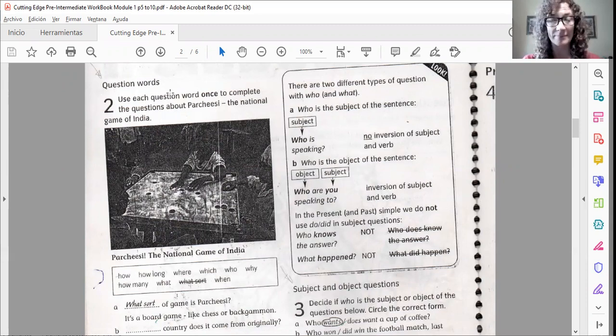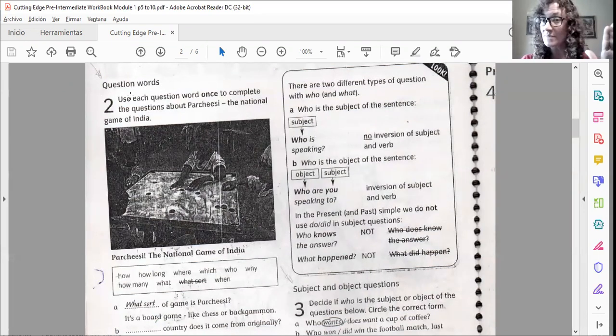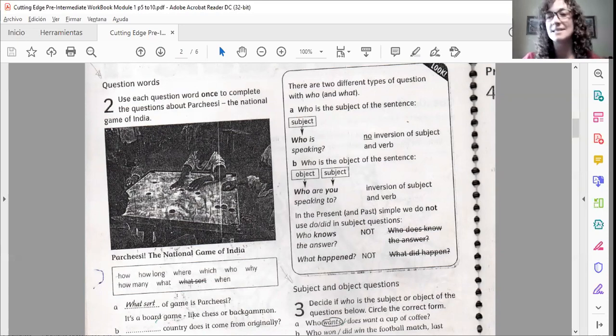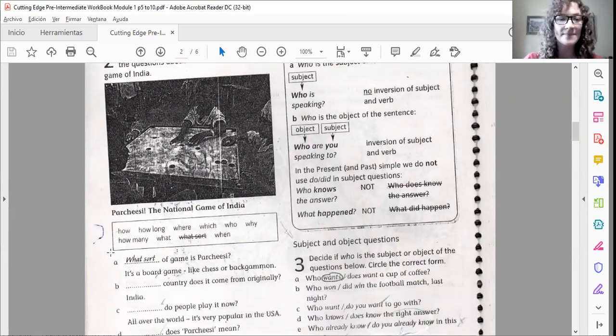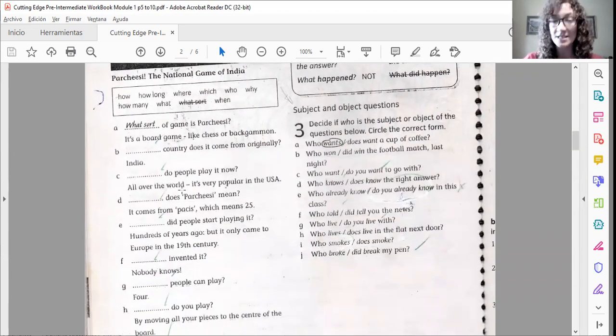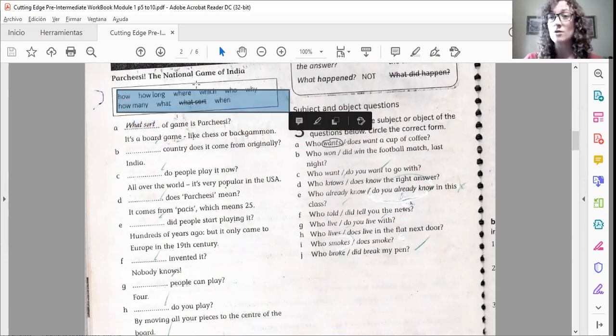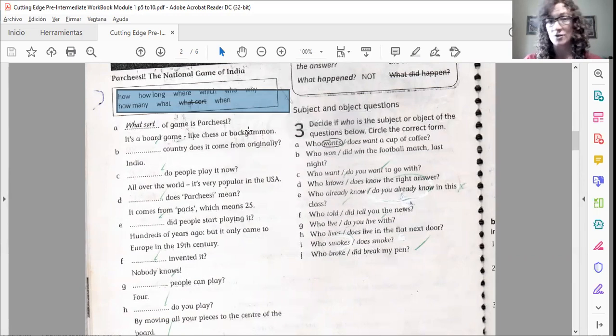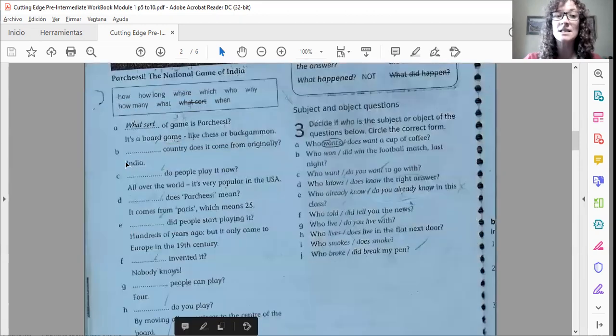Use each question word once to complete the questions about Parchesi, the national game of India. That is a choice. Another option is to stop the video, read the task and then listen to my reading and check if your pronunciation is correct.